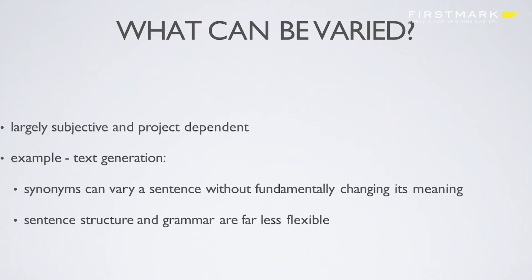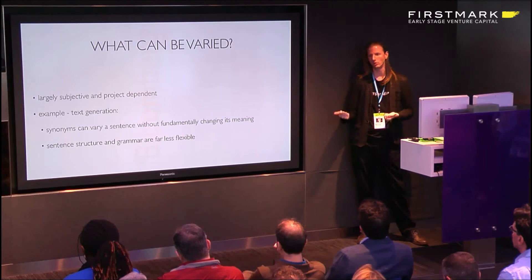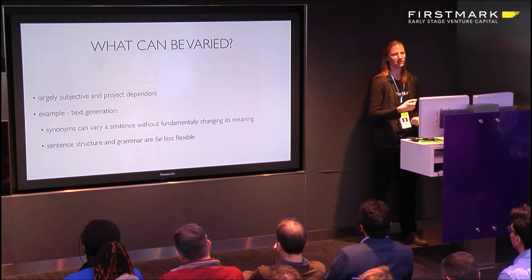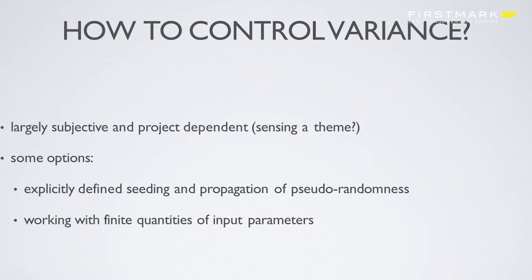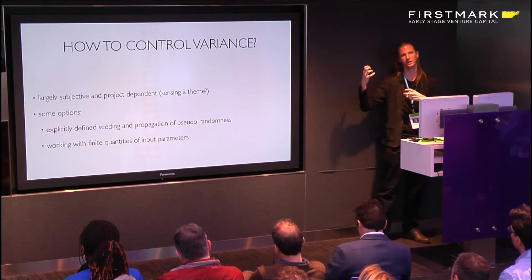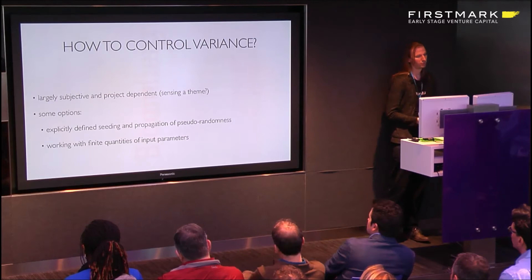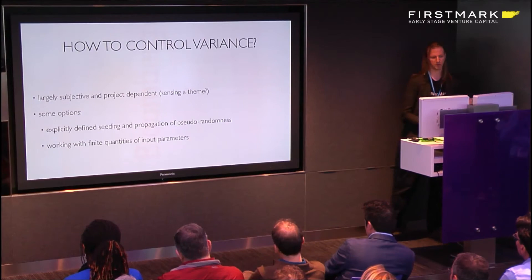Determining what actually can be varied also depends on your use case. An example: in text generation, a very good thing to vary is using synonyms for different words. A thing you probably don't want to vary is the actual grammar and syntax, because then it becomes not actually the text you were expecting. How much control do you want? It also depends. You can take the back-and-forth between random versus procedural. Procedural has randomness to it, but all of the pieces being put together randomly are already curated by people. Or you could define something, it makes something, and it's done - totally project dependent.